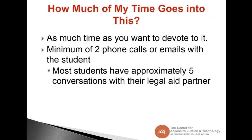How much of your time goes into this? It's basically as much time as you want to devote. A minimum of about two phone calls or emails — one at the beginning and one at the end of the semester — to define the scope and then to review the final project. Most students have approximately five conversations with their legal aid partner. The projects themselves are reviewed by the faculty members for completeness and flow. I go through the projects several times in the scope phase, the storyboard phase, and then in the actual interview itself. If there are broken links, they are fixed. If there are issues with plain language, we deal with that as well. If you need specific standard language in the beginning of your interview, you can let your student know and they can add that in — for example, all of your standard disclaimers like 'we're not your lawyer.' The more interaction you put into this with a student, the better your package is going to be at the end.